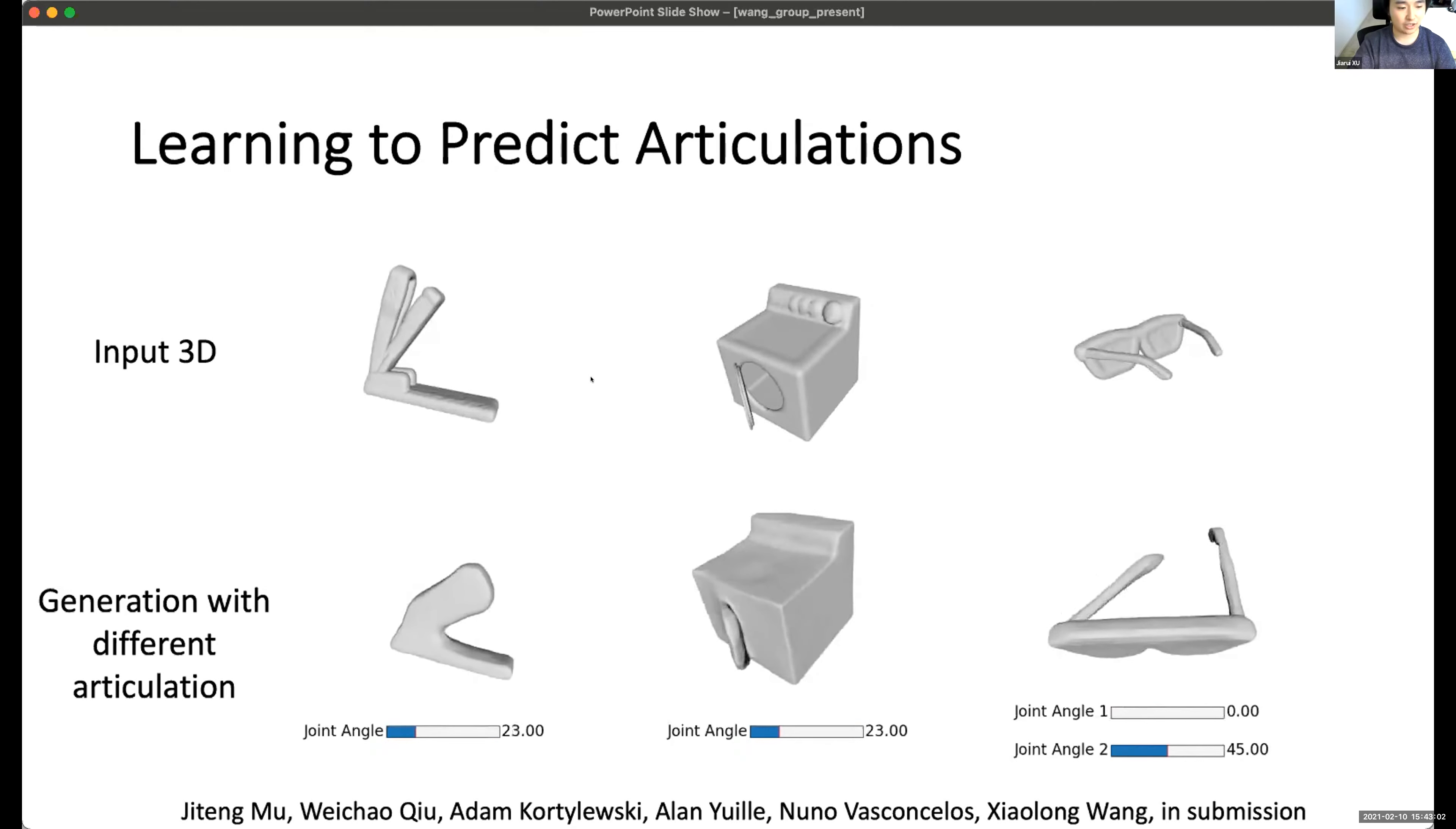And besides predicting the articulation angle, we can also generate objects with different articulation angle. For example, we can see this is the opening door process of the washing machine or the moving out the legs of sunglasses and also the stapler.